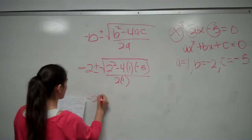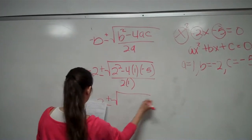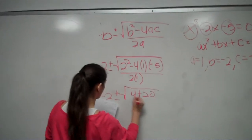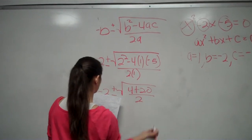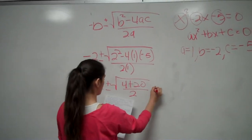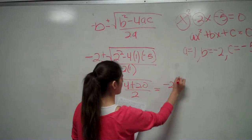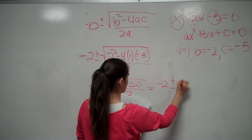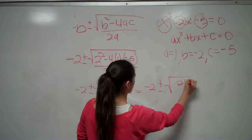When you solve, you get 2 plus or minus the square root of 4 plus 20, over 2, which equals 2 plus or minus the square root of 24, over 2.